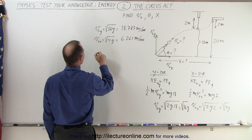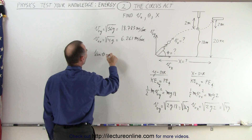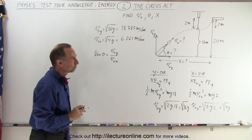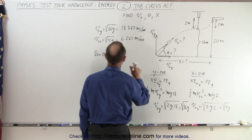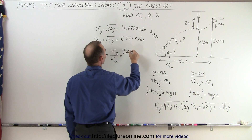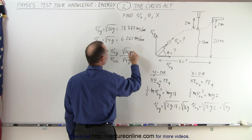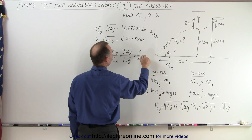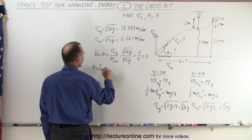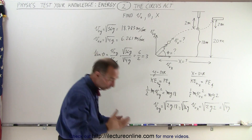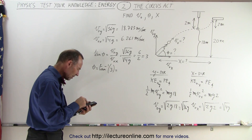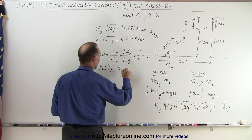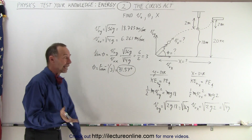Now we can find the angle. The tangent of angle theta equals v_y divided by v_x — the opposite side over the adjacent side. This equals √(36g) divided by √(4g). The g's cancel out, giving √36 / √4 = 6/2 = 3. Therefore theta equals the inverse tangent of 3, which is 71.57 degrees. That is the angle at which the cannon needs to be directed.